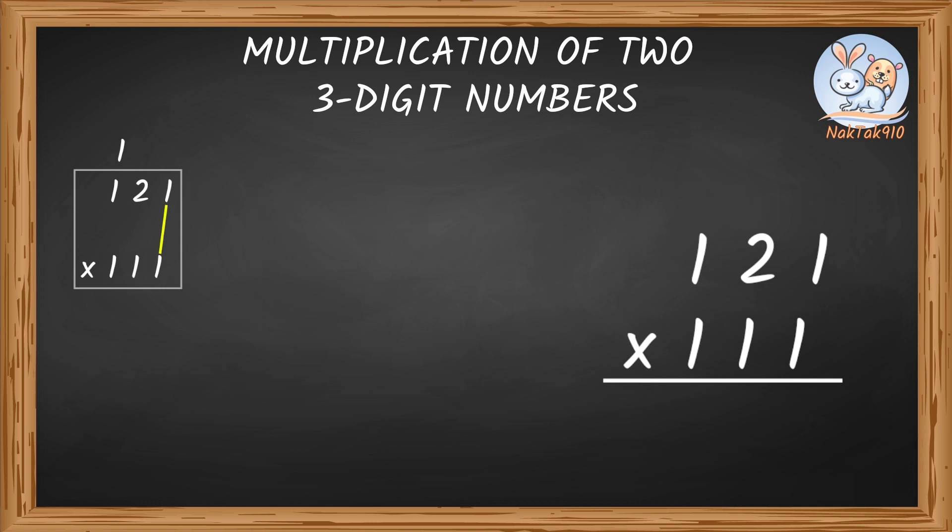Step 1. Multiply 1 times 1. 1 times 1 equals 1. Write this 1 at the rightmost end of the answer, like the units place of our answer.